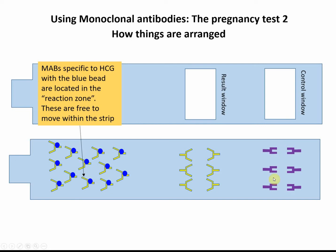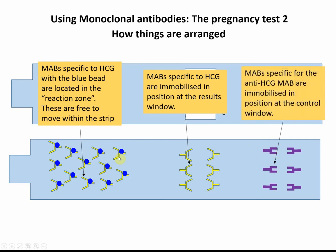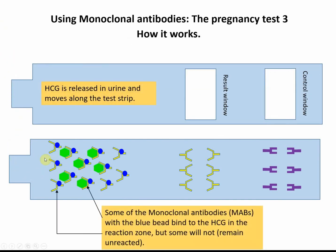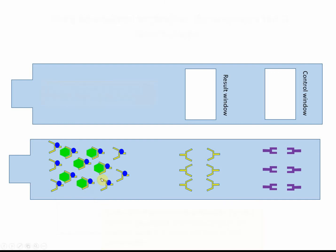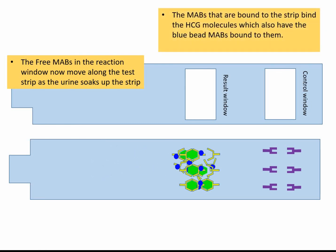So to summarise the strip: we have our immobilised antibodies in the results window, and we have our antibodies against those antibodies stuck down in the control window. How does it work? If a woman is pregnant, she urinates on the absorbent end of the stick and the urine flows along — it will contain HCG and will move along the test strip, where some of it will bind to the free monoclonal antibodies because they're specific. These monoclonal antibodies will bind to the HCG, though quite a lot of them won't bind to any HCG at all, and they'll move through from the reaction zone to the results window.